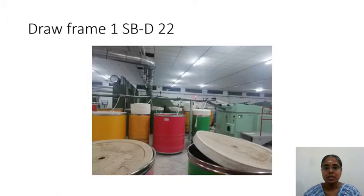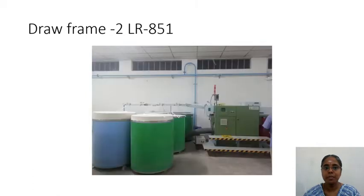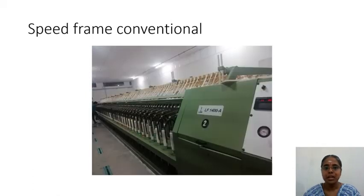After carding, the sliver cans are fed into the draw frame, where drafting and doubling take place, giving a more uniform sliver output. This picture also shows a draw frame.